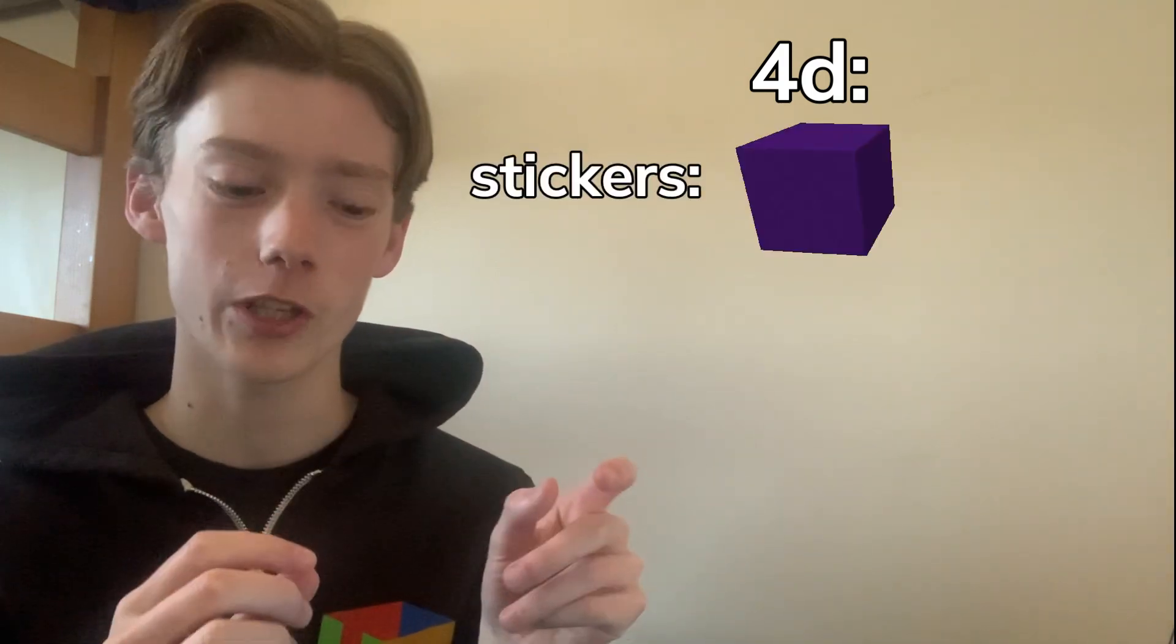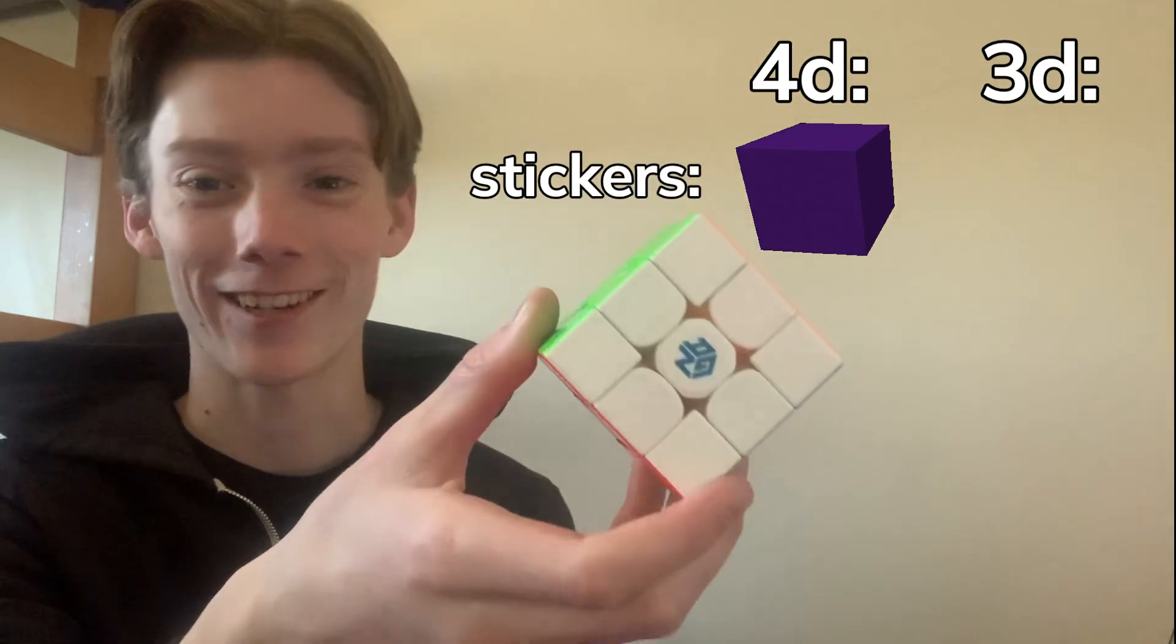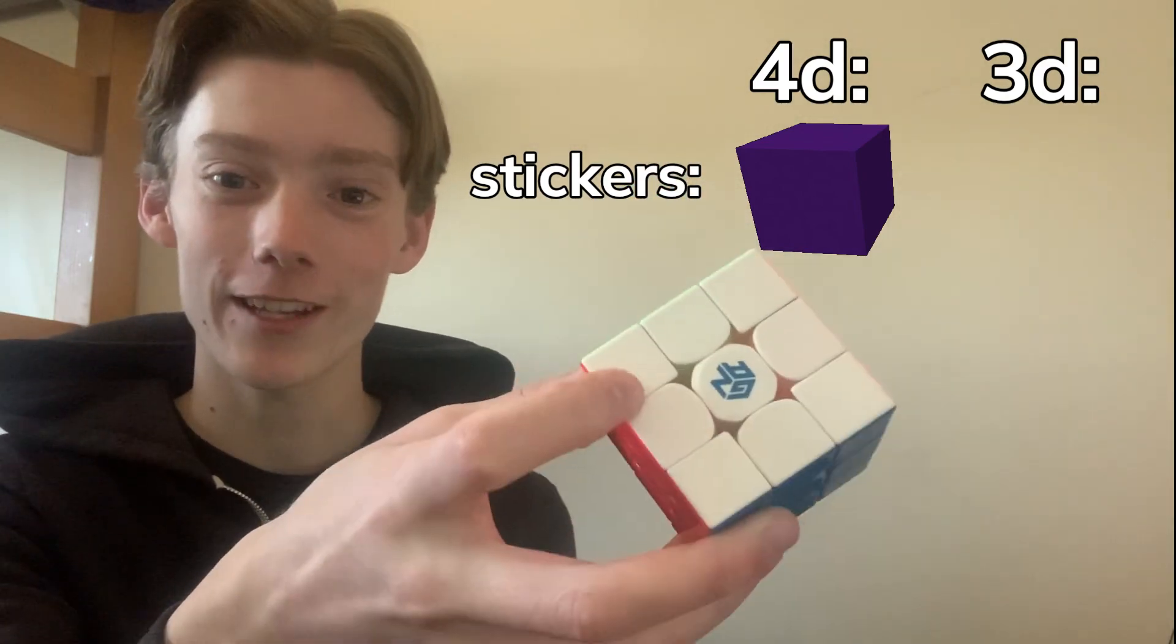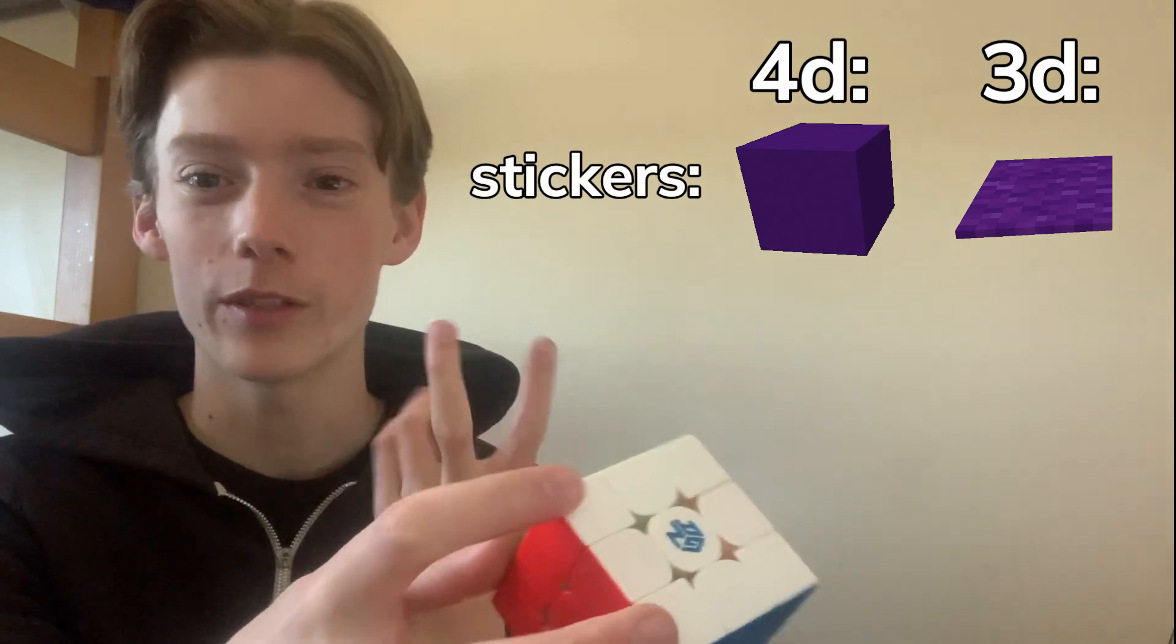And also notice how on the four-dimensional Rubik's Cube, each of the stickers is a little cube, and on the three-dimensional Rubik's Cube, each of the stickers is just a two-dimensional square on a cubic, cubey piece.